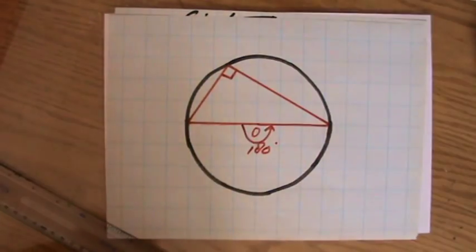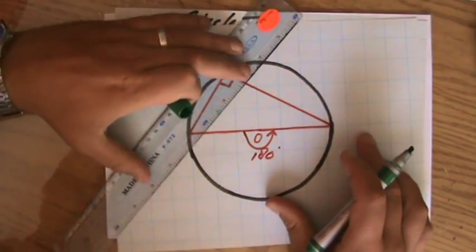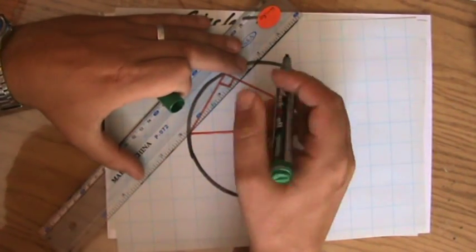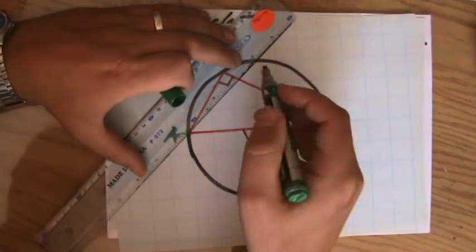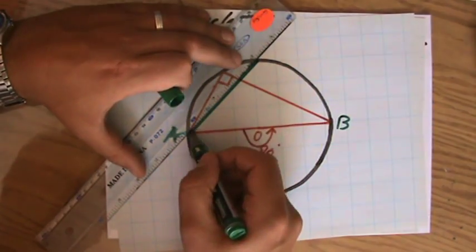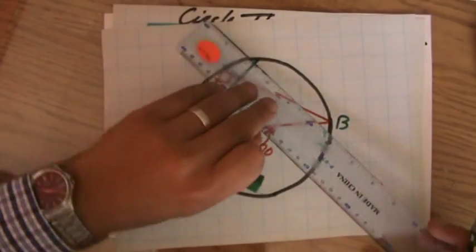And that is crucial for you to realize in questions, whenever they will talk about, let's say AB, the line AB is the diameter, and you're doing circle theorems, then you are looking for right-angle triangle.